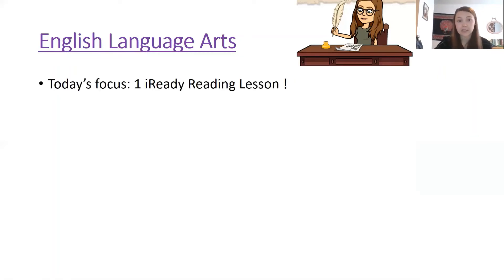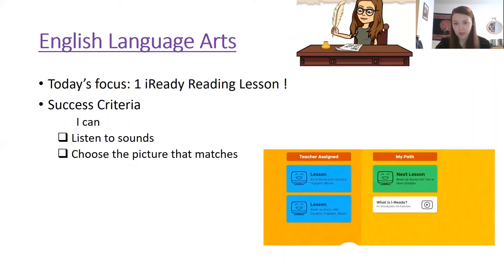Okay and today you're going to practice using those skills in one iReady reading lesson. Now you have two lessons that should be assigned from me today but you only need to do the first lesson and your success criteria for that lesson is I can listen to sounds and choose the picture that matches. So on your teacher assigned lessons, remember that's on the blue side, you just need to click on the first one where it says lesson blend words with digraphs, trigraphs, and blends. In this lesson you're going to be listening to sounds and blending them together and choosing the picture that matches the words.